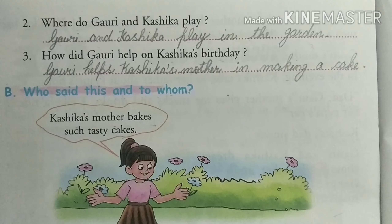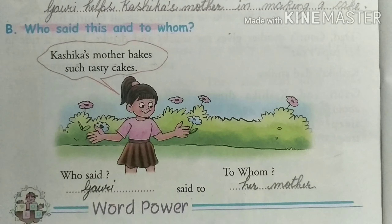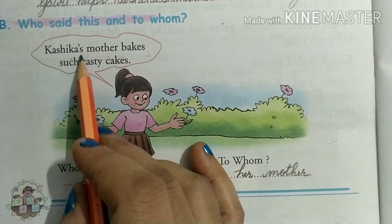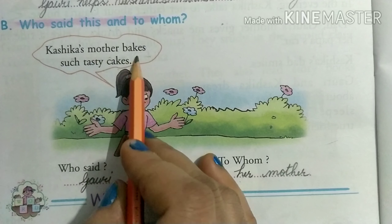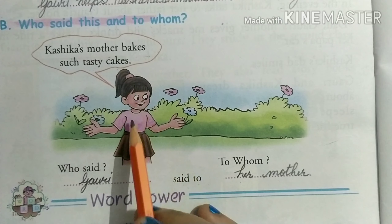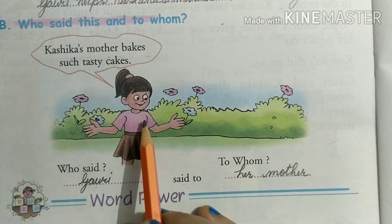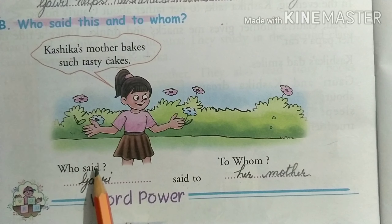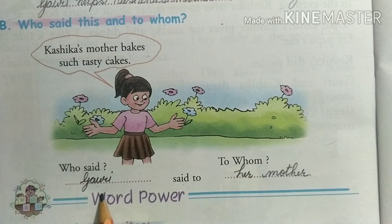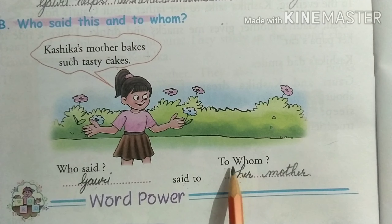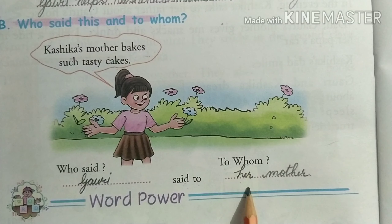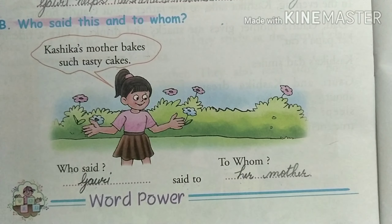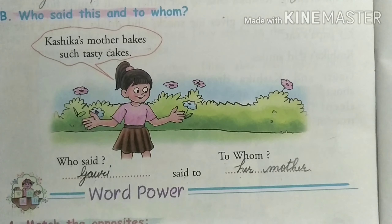Who said this and to whom? Kis nai ye kaha, kis ko? The line given is: 'Kashika's mother bakes such a tasty cake.' Ye Gori nai kaha. Said to whom? Her mother — apni mammi ko kaha, Gori nai.